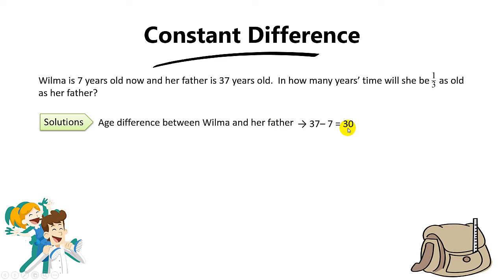It means that her father is 30 years older than Wilma. And now the question says in how many years time will Wilma be one third as old as her father?